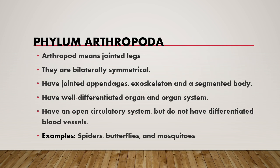Phylum Arthropoda: arthropod means jointed legs. They are bilaterally symmetrical and have jointed appendages, an exoskeleton, and a segmented body. They have well-differentiated organ systems. They have an open circulatory system but it is not differentiated into blood vessels. Examples include spiders and mosquitoes.